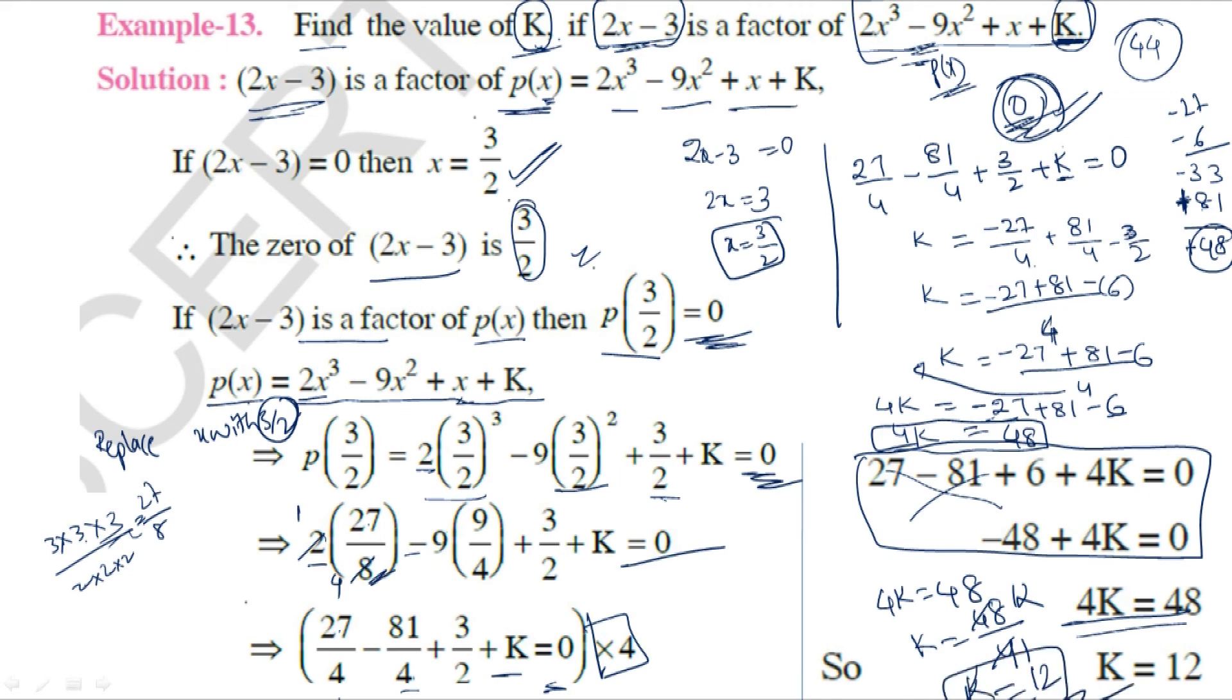So the K value is 12. When (2x - 3) is a factor of the polynomial 2x³ - 9x² + x + K, with remainder 0, we get K = 12.